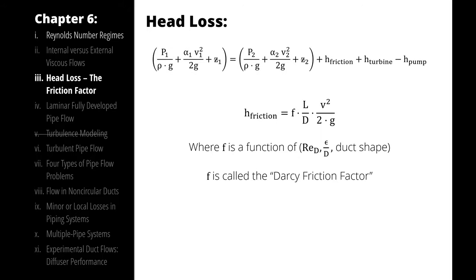In general, our friction head, or our head loss, is the Darcy friction factor multiplied by the unitless proportion of length over diameter, multiplied by the velocity squared divided by 2 times gravity.